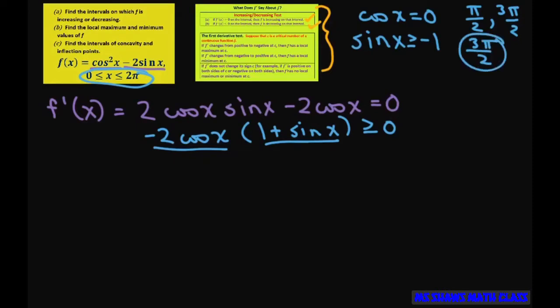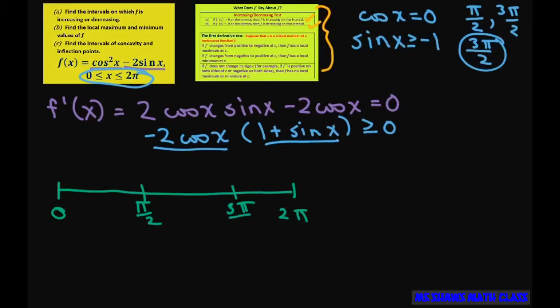So now we've got our intervals, and I use a little sign diagram. We're going from 0 to 2 pi, and we have pi over 2 and 3 pi over 2. So you merely plug in points into your derivative to see where it's increasing or decreasing. If I plug in pi over 4, that's going to make this value negative and this value positive, so a negative times a positive is a negative.